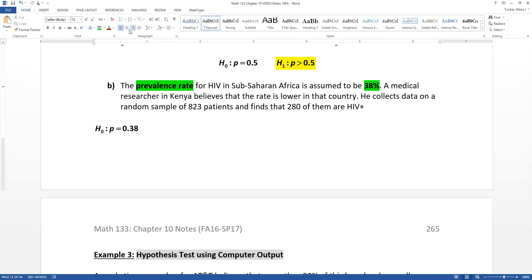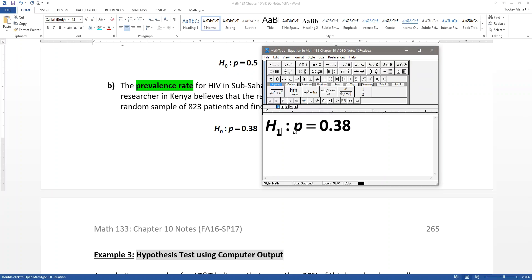Then your alternative hypothesis must be either less than, greater than, or not equal to. So you see this word here, lower. The lower part means that it must be less than 0.38 for the alternative hypothesis. So this becomes a less than symbol right there.